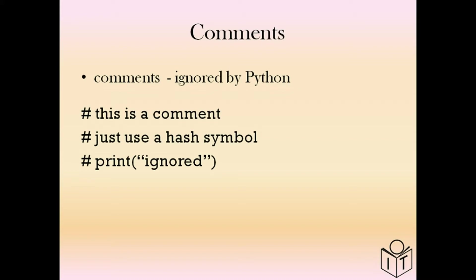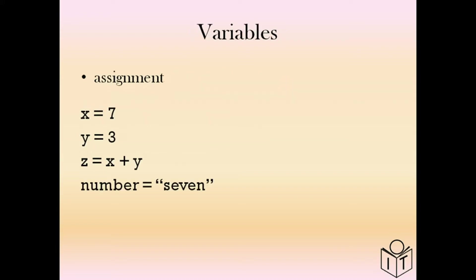For comments, just use a hash symbol in front of whatever you write. You can use the hash symbol in front of many lines if you want to take them out. For assignment, if you've got a variable like x and you want to give it a number like 7, you can just say x equals 7. Or as a string, here we've got number equals '7', which is the string 7.